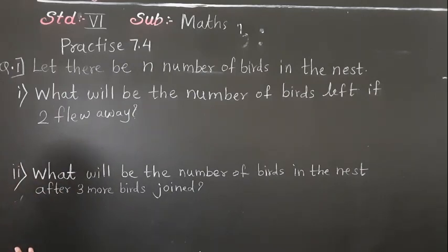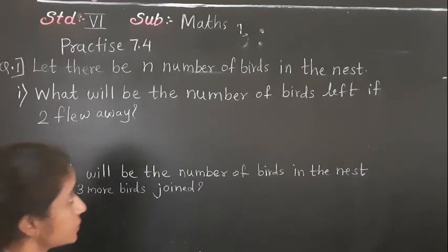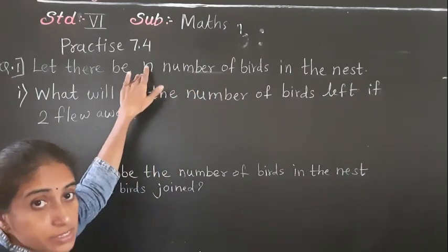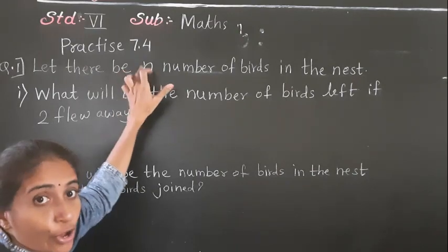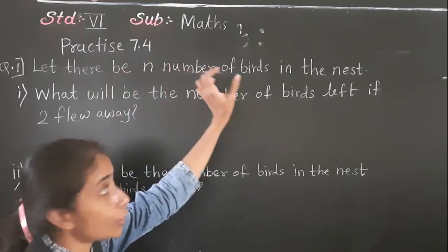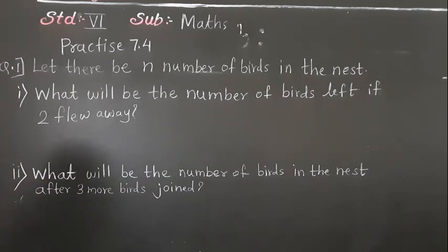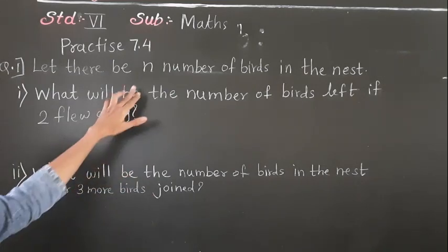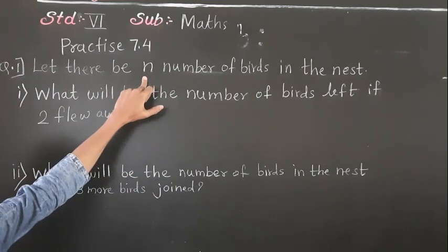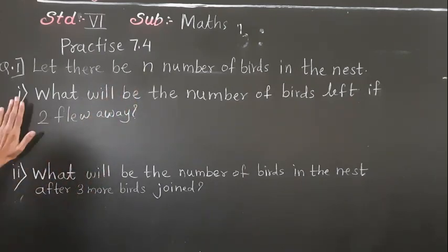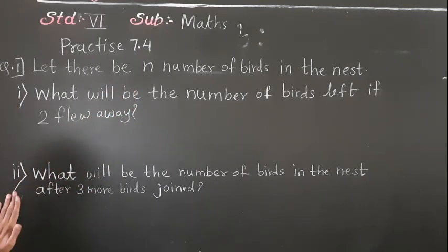Practice 7.4, question number 1. Let there be N number of birds in the nest — the letter given for number of birds is N.